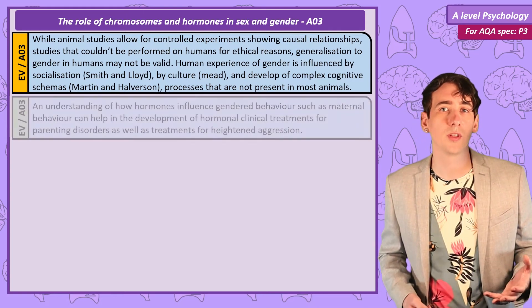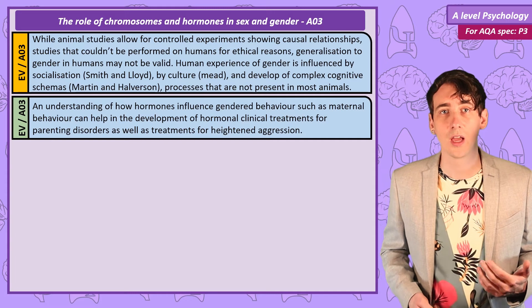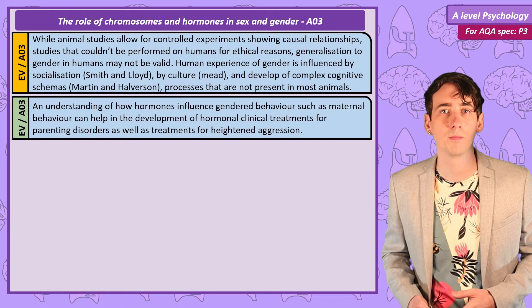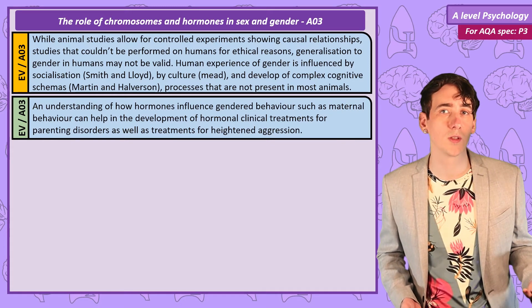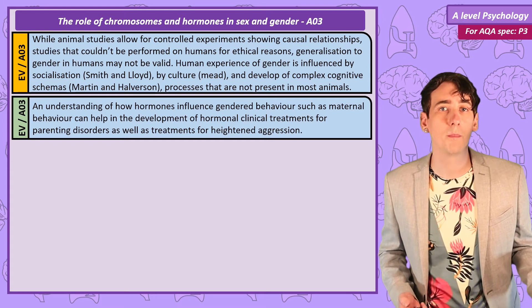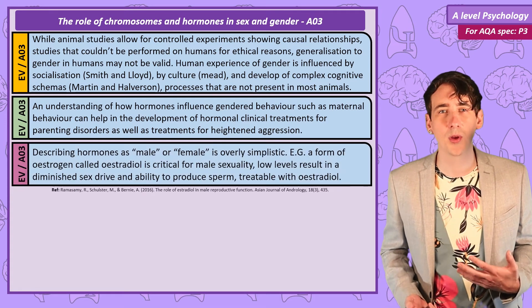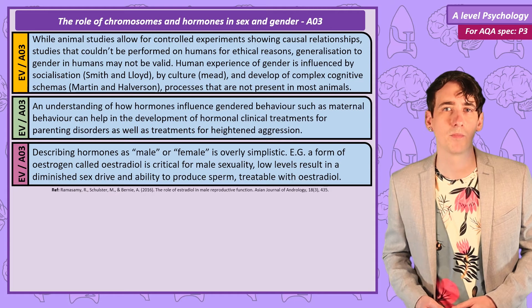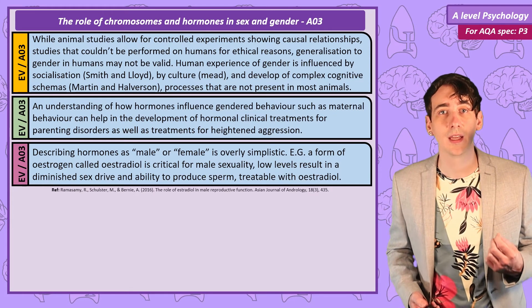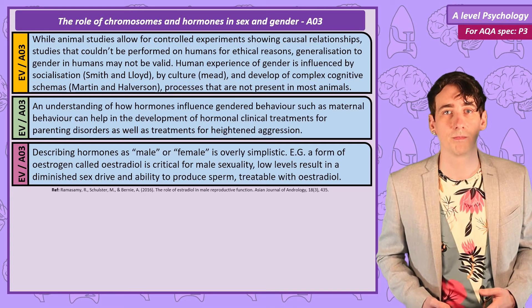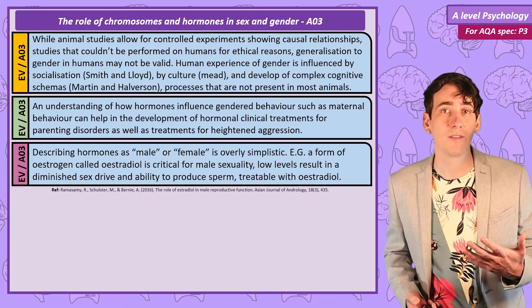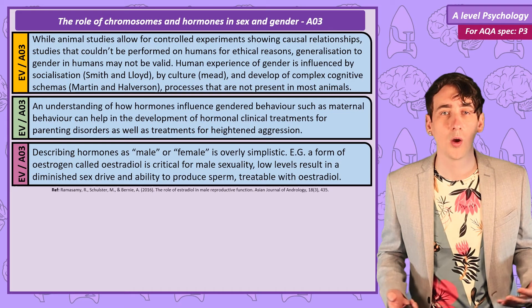One positive of this research is practical applications. Understanding the role hormones play in gendered behaviour could lead to hormonal therapies, say for example for women who are struggling to pair bond with their infant, or addressing the issues around heightened aggression. But while we have talked about male and female sex hormones, that picture is too simplistic. One example is a form of oestrogen has been found to be vital in the male sex drive and in sperm production, and this can be treated by giving what has been traditionally thought to be a female sex hormone to males with low sex drives.